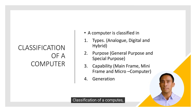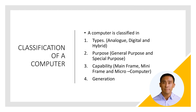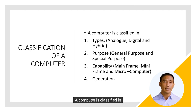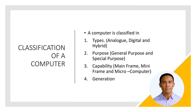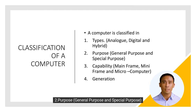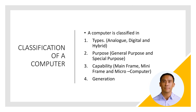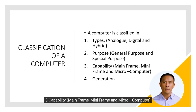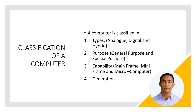Classification of computers: a computer is classified by 1. Type — analog, digital, and hybrid; 2. Purpose — general purpose and special purpose; 3. Capability — mainframe, mini-frame, and microcomputer; 4. Generation.